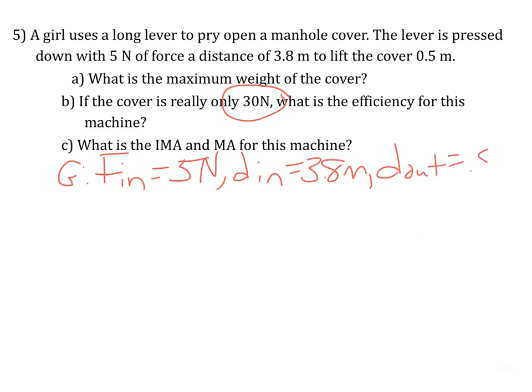Now our F out is not 38, our F out is only 30 because it didn't quite lift as much as it could have, and so we're trying to find efficiency, we just call that E.